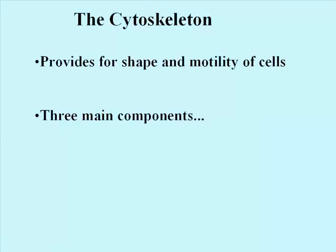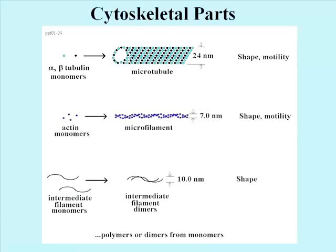We'll conclude our tour of the cell with a look at the cytoskeleton. The cytoskeleton is a uniquely eukaryotic phenomenon. The three main components of the cytoskeleton provide shape to cells and participate in motility. Microtubules are shown at the top — these are made up mostly of polymerized alpha and beta tubulin polypeptides, and they're involved in cell shape as well as in cell motility. Microtubules are thought to be hollow tubes, and at 24 nm in diameter they're the largest cytoskeletal element.